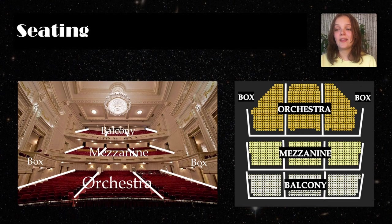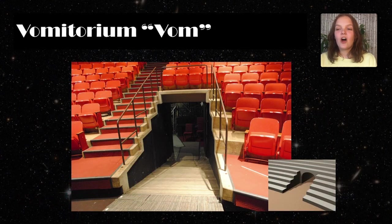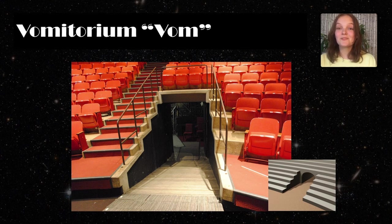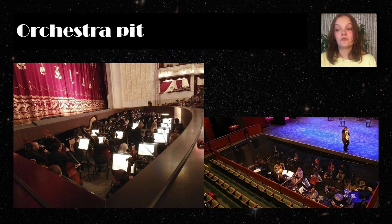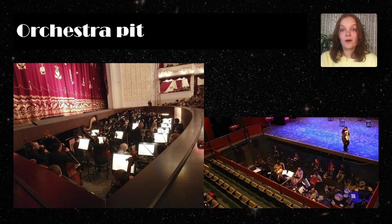An aisle is a passageway in the auditorium that separates seating groups and allows for passing through the seating area. A vomitorium, or simply called a vom, is a raised entryway from below that lets performers run on stage. This special form of entrance is most common in thrust or in-the-round theaters. The orchestra pit is the reserved space for the musicians to sit and play for the onstage performance. The orchestra is usually located in front of or below the stage in a musical, which is why it's called the pit.